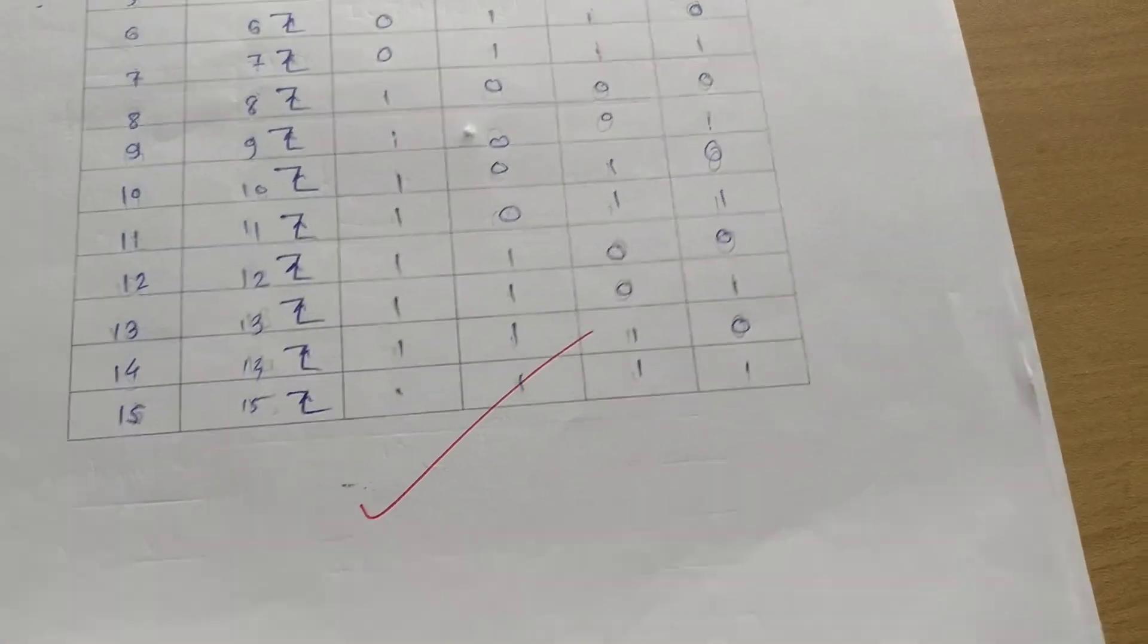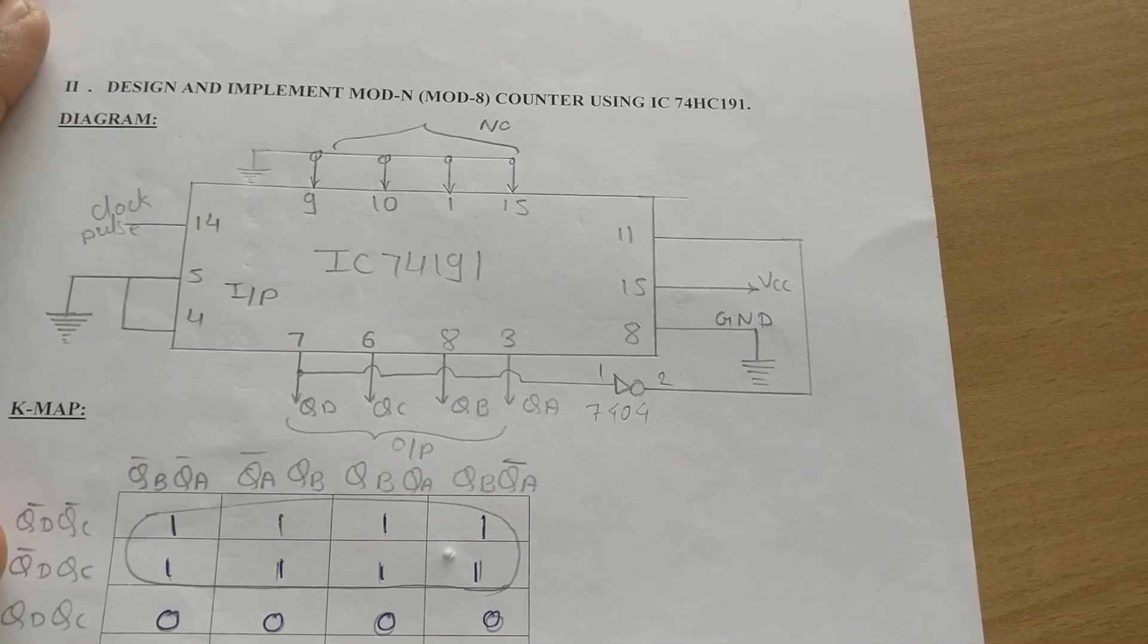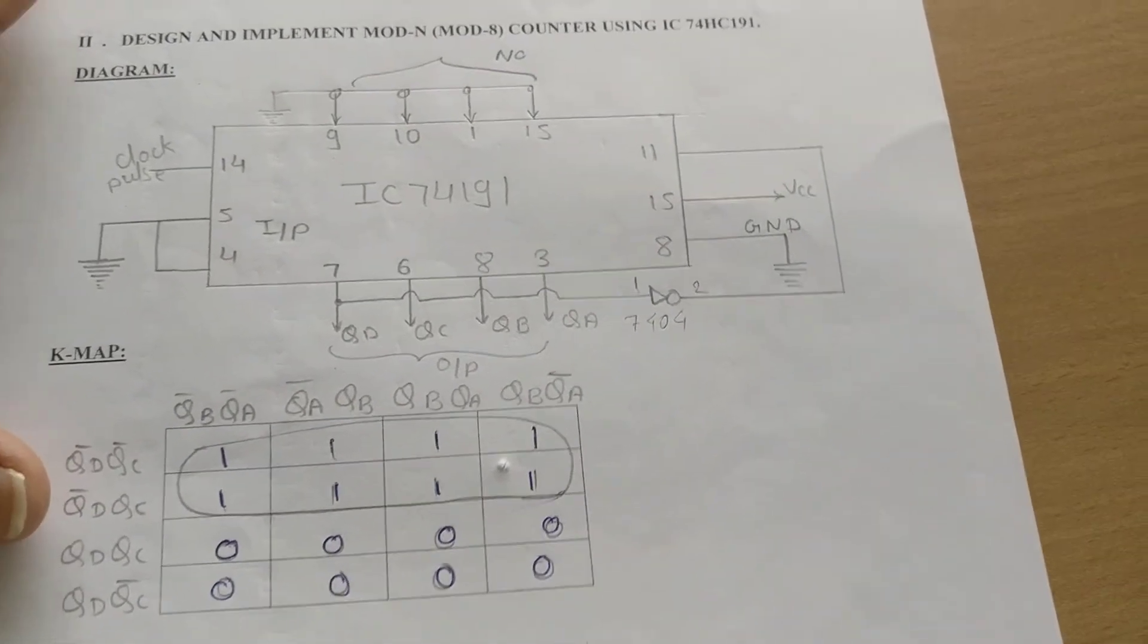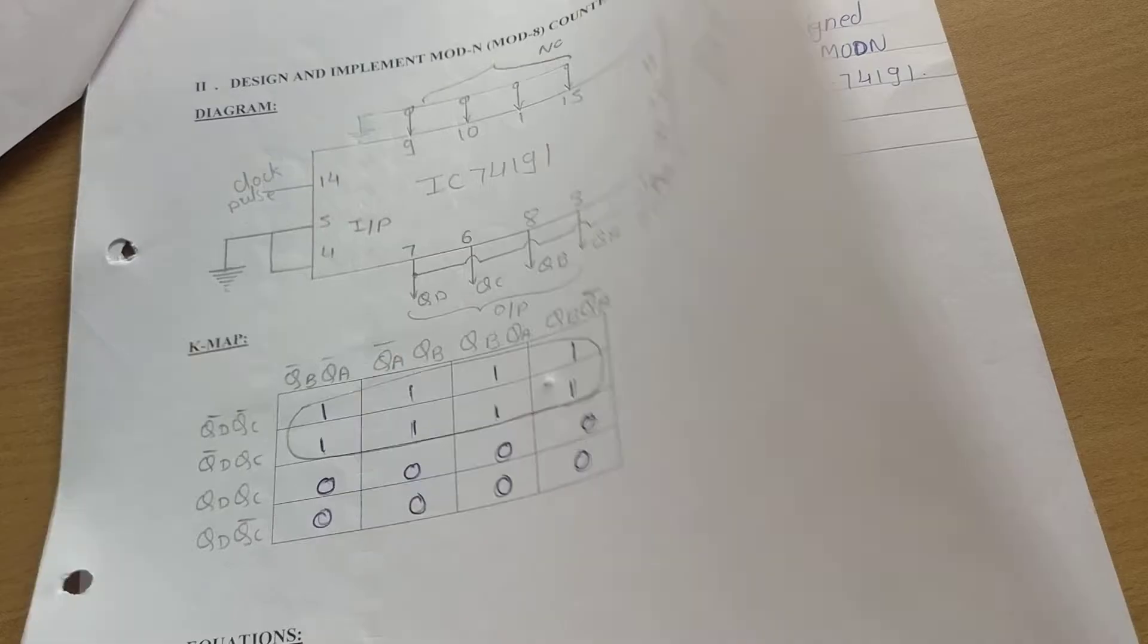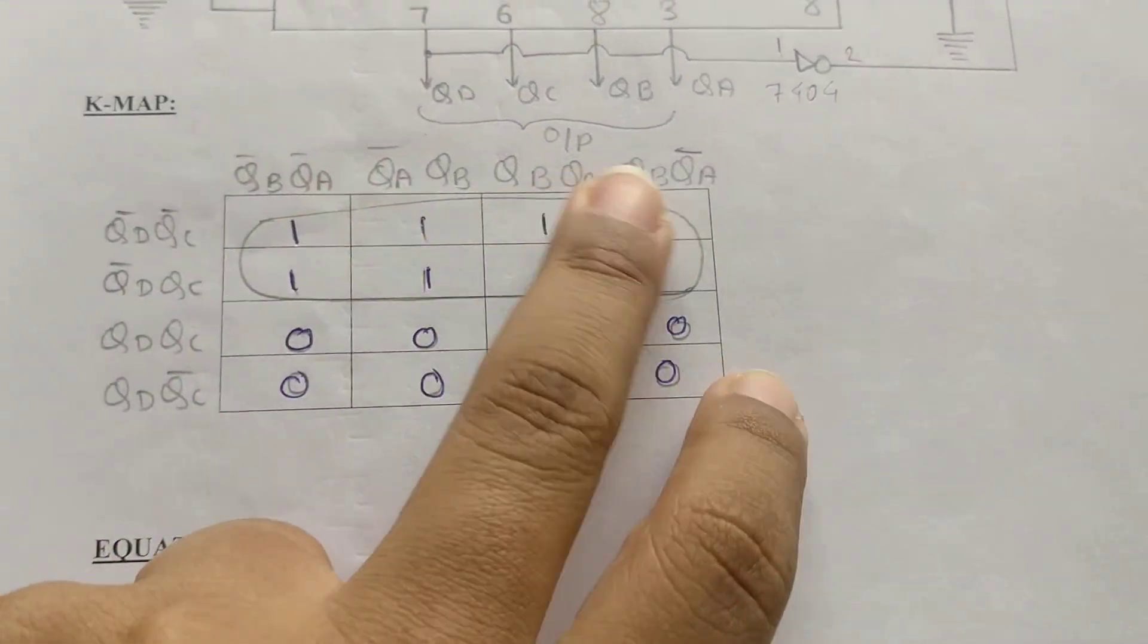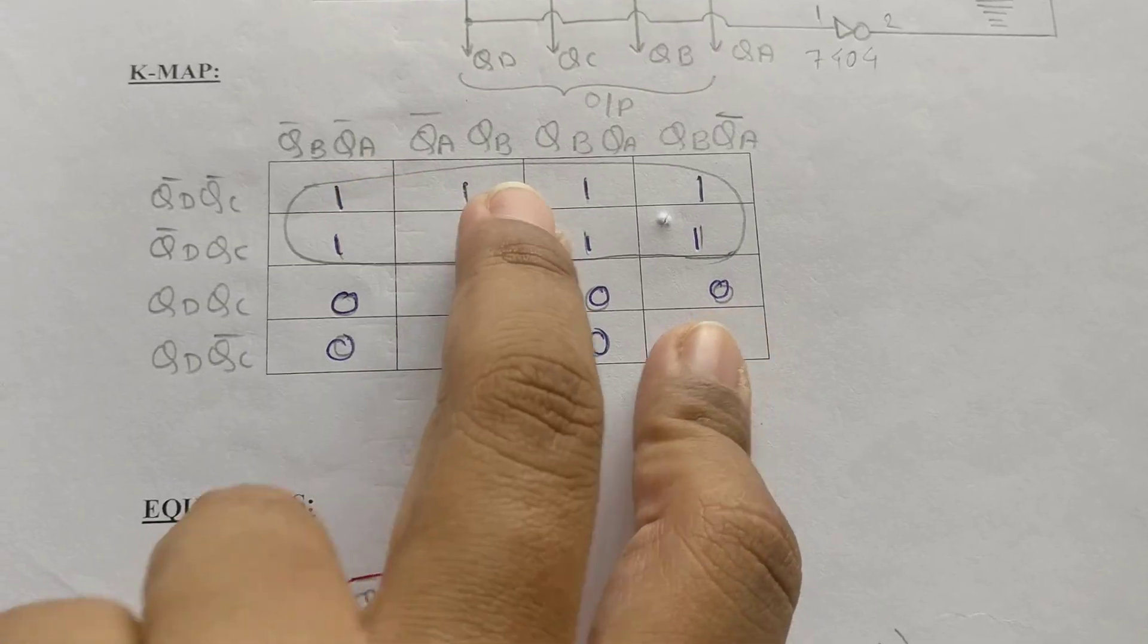The next part of this experiment is to design and implement a mod N, that is mod 8 counter, using IC 74191. For mod 8 counter, if you draw the K-map, you will see that for the first 8 cells we have put 1. So it is 0, 1, 2, 3,